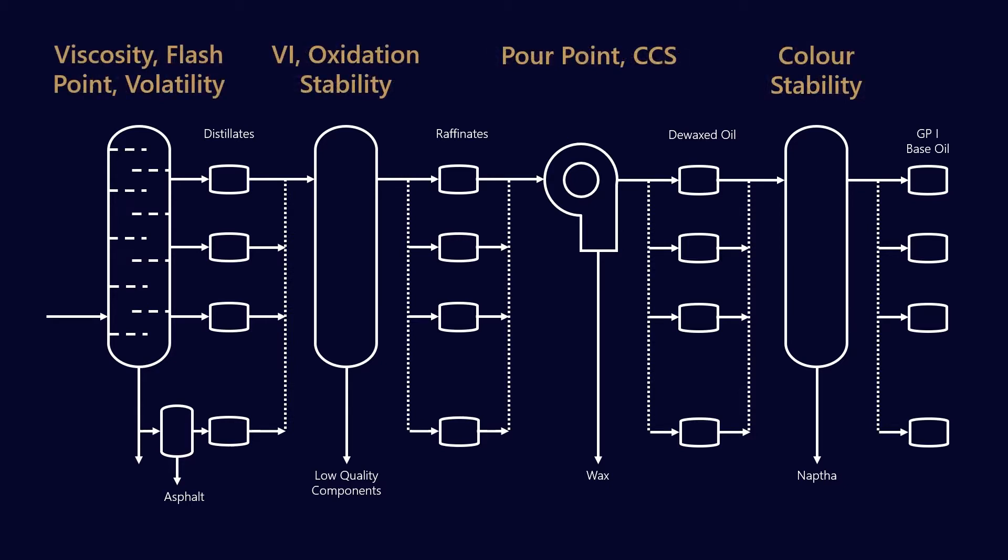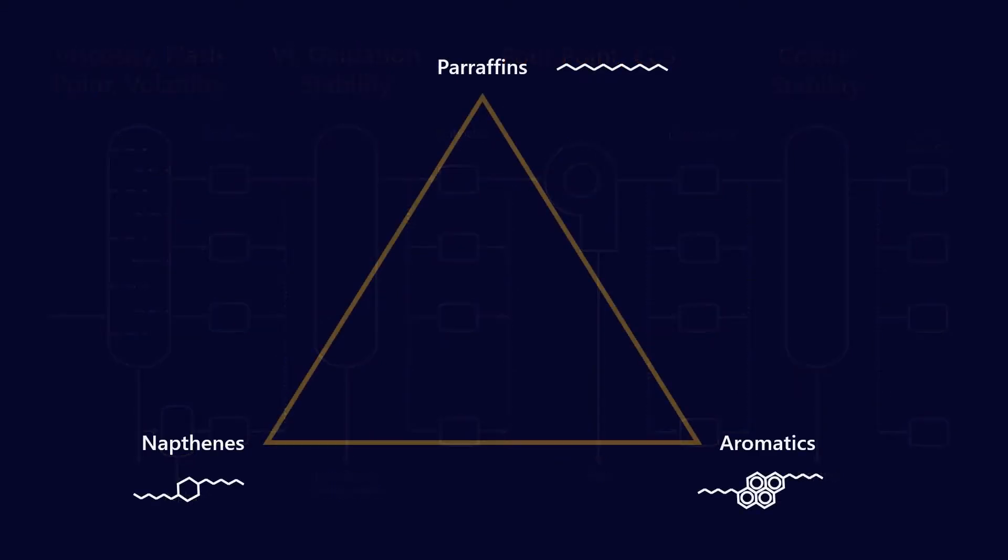Each of these steps imparts different properties by doing things like removing waxes, breaking aromatic rings, saturating double bonds. Ultimately if we take this three-axis model where we have aromatics, naphthenes and paraffins, as we move from group one to group two to group three we are eliminating all the aromatics and naphthenes and ending up with a more paraffinic base oil product.